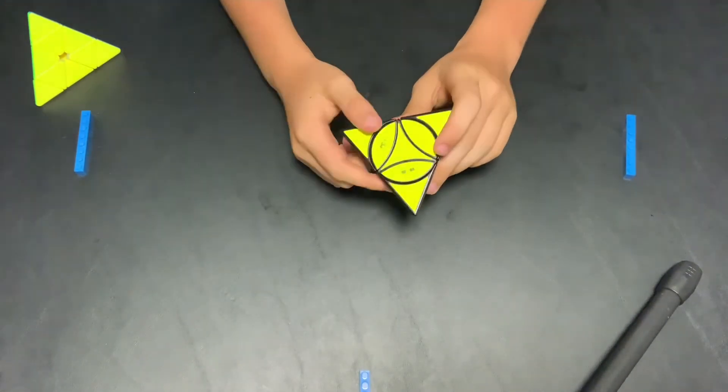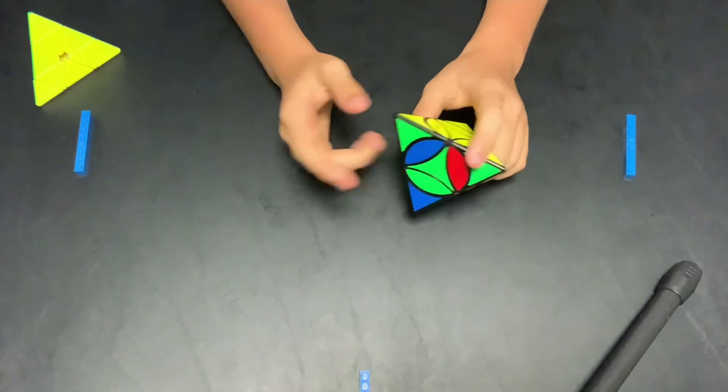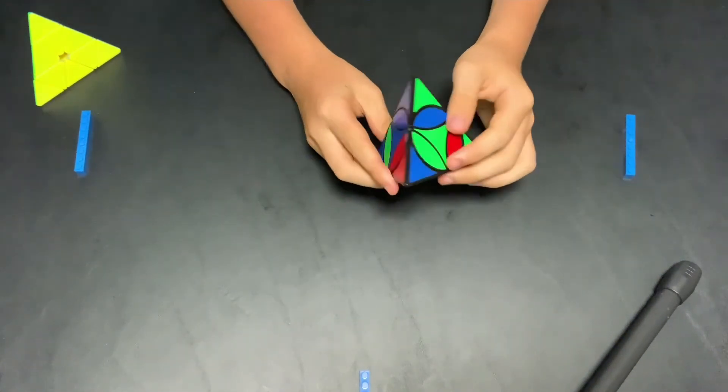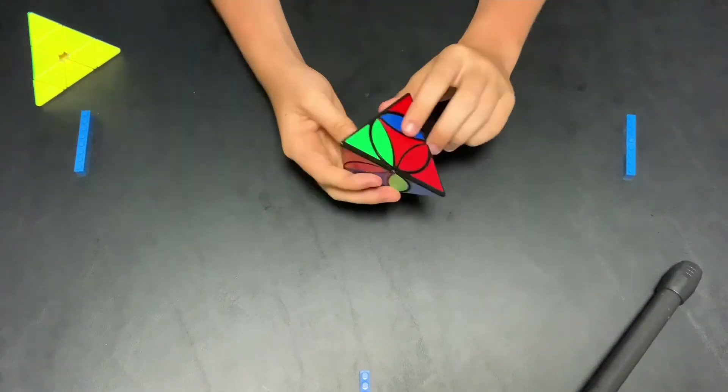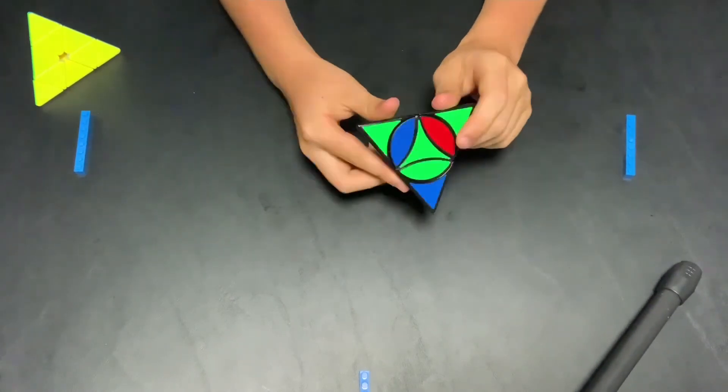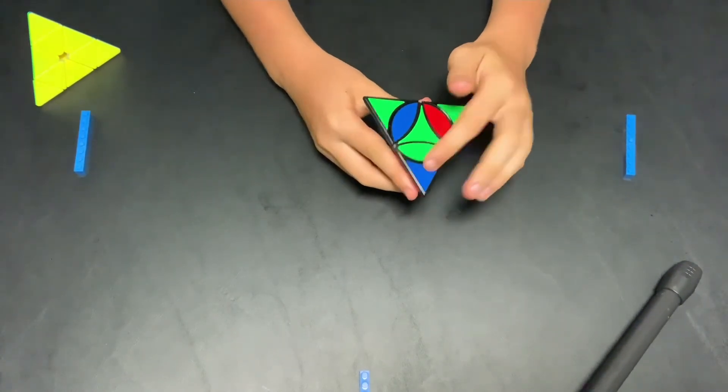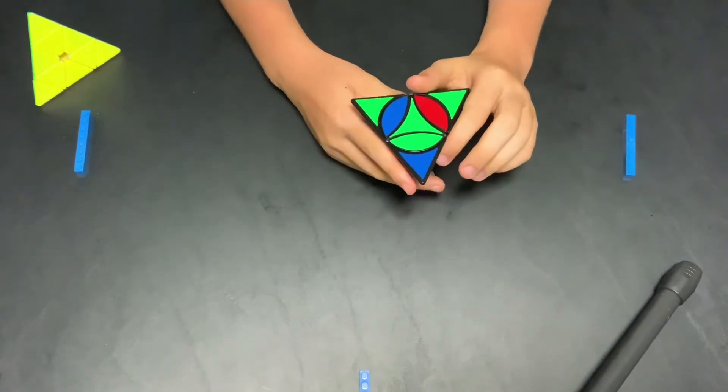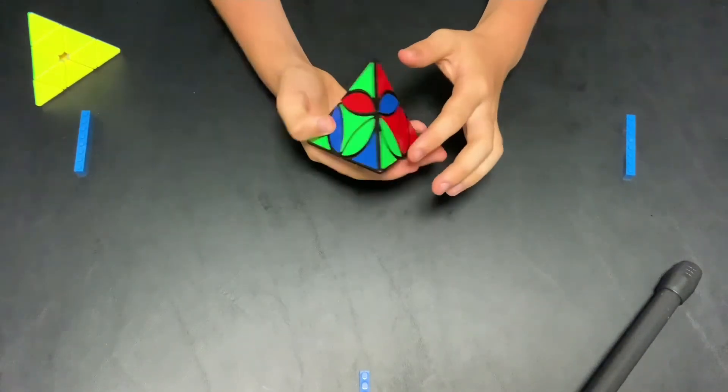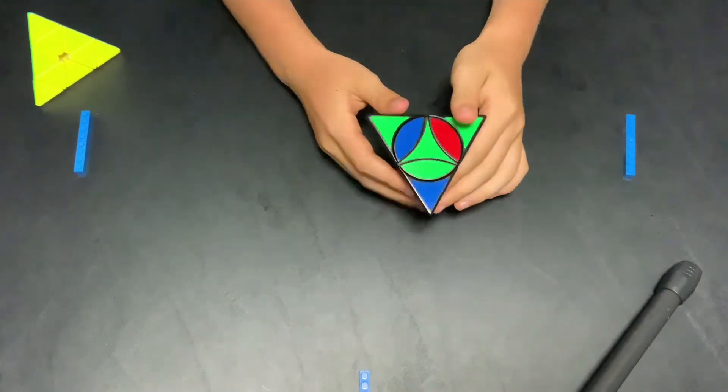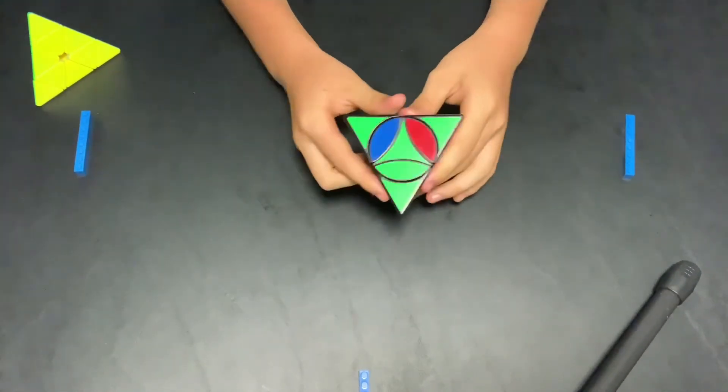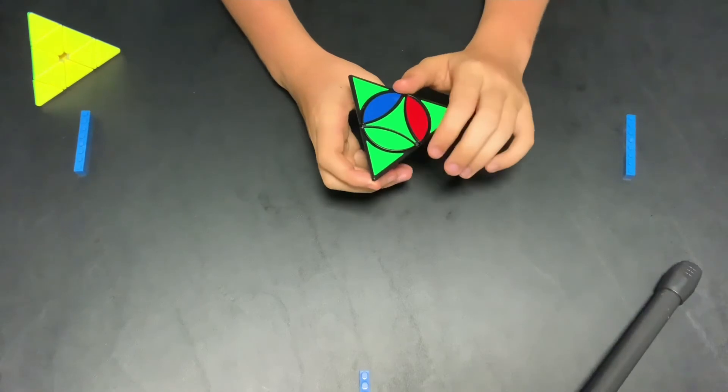Now we're going to go on to green. Green's just an example side. So same thing as last time put all the tips on the green side first. And so there's a tip right here that we can just turn like that. And now all three tips are on there.